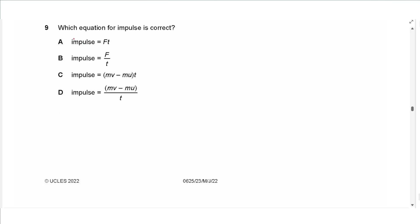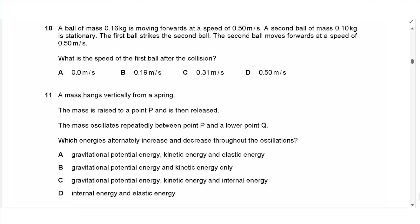Question 9: Which equation for impulse is correct? Impulse equals force multiplied by time. The first option is the correct answer, so the answer is A.